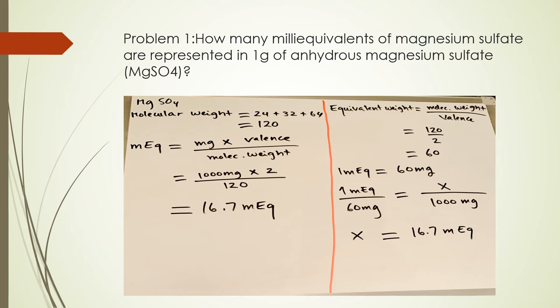Now, you can also solve this using a different way, a different formula. Remember the last formula on the previous slide that I talked about, the milliequivalent weight? To find the milliequivalent weight, that's going to be 120 divided by the valence, which is 2. So the milliequivalent weight is 60. So that means 1 mEq is equal to 60 milligrams.